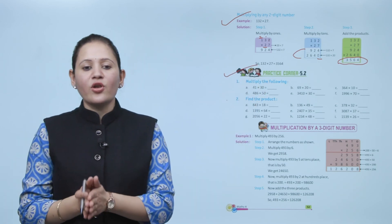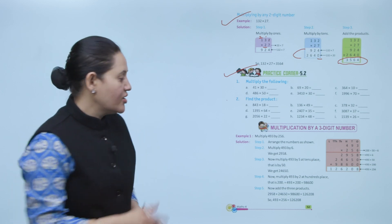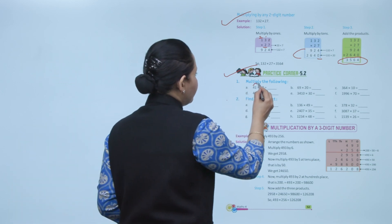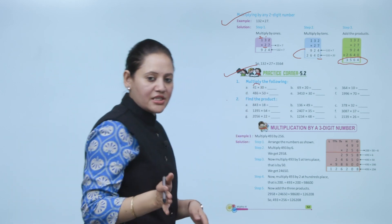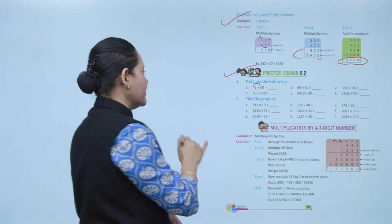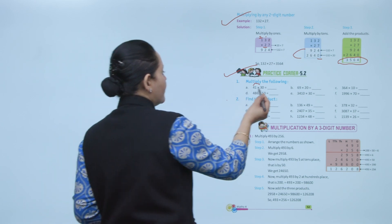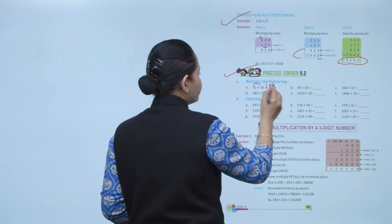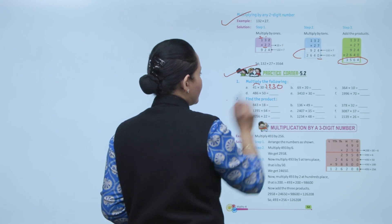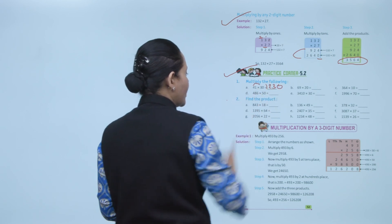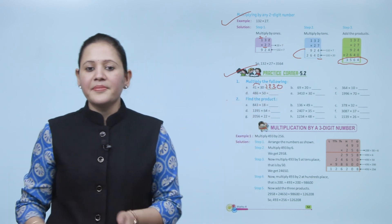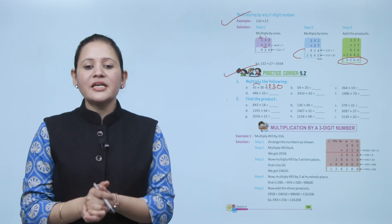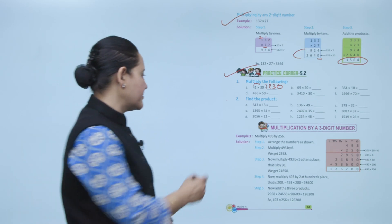Next is practice corner 5.2. Multiply the following: 41 into 30. First multiply 41 by 3 and put one zero at the end, giving 1230. Practice all the questions of this exercise.